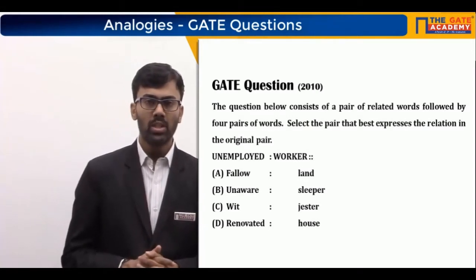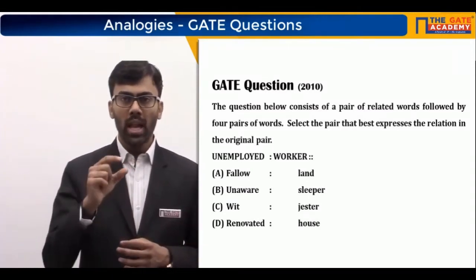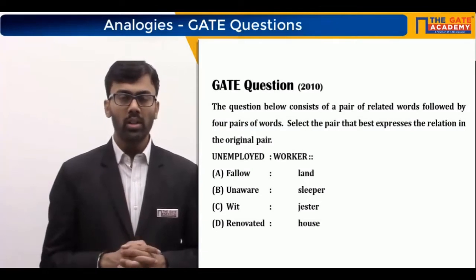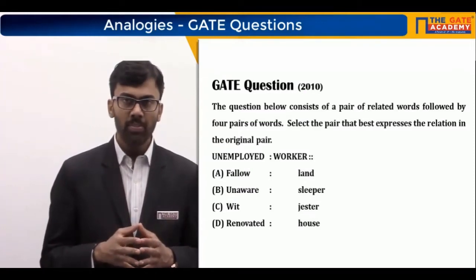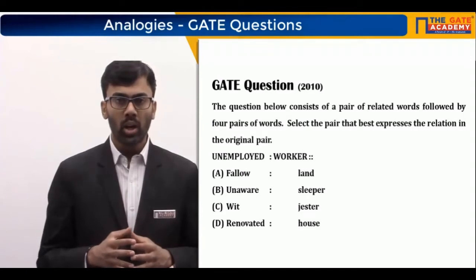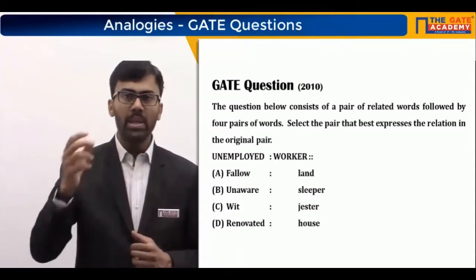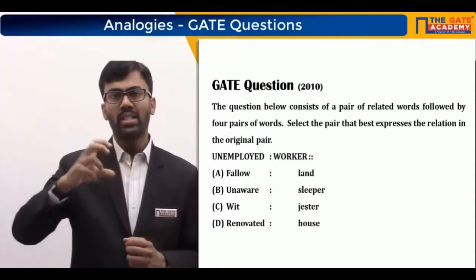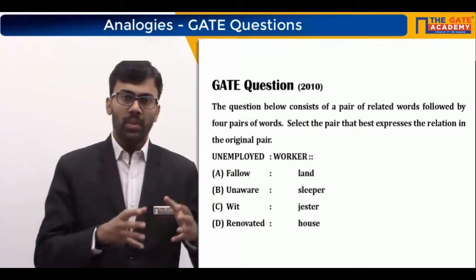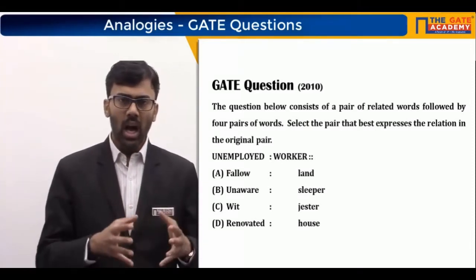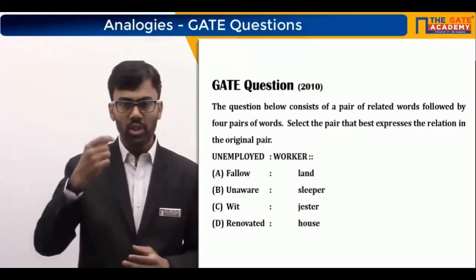The first question's pair of words is 'unemployed : worker'. There is a colon between 'unemployed' and 'worker,' and after 'worker' there are two colons. This simply means: unemployed is related to worker exactly as dash is related to dash. The two colons can be read as 'exactly as' or 'in the same relationship as.'